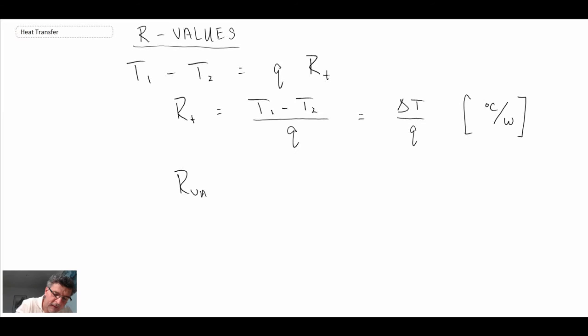Now, the R-value is quantifying delta T divided by heat flux, so Q per unit area. Consequently, the units of an R-value are a little bit different from the thermal resistance in that it will be degrees C meters squared per watt. A way of thinking of the R-value, if we're looking at this in SI, is it is essentially the temperature drop for one watt of heat flowing through one square meter of material.